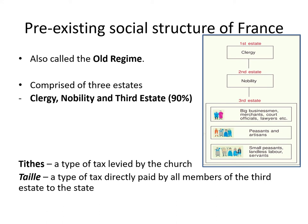How was French society before the French Revolution? That is the pre-existing social structure, which is very important to know. The pre-existing society and institutions of France before 1789 was also known as the old regime. In this old regime, the society was divided into three estates — the clergy, the nobility, and the third estate — including a few big businessmen, merchants, court officials, lawyers, etc.